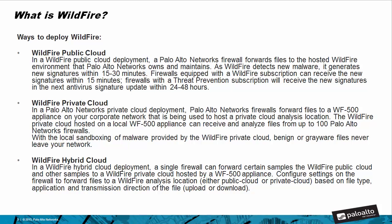In a hybrid cloud deployment, a single firewall can forward certain samples to the WildFire public cloud and other samples to a WildFire private cloud hosted by a WildFire 500 (WF-500) appliance. Configure the settings on the firewall to forward files to a WildFire analysis location — either a public cloud or private cloud — based on the file type, application, and transmission direction of the file, either uploaded or downloaded.